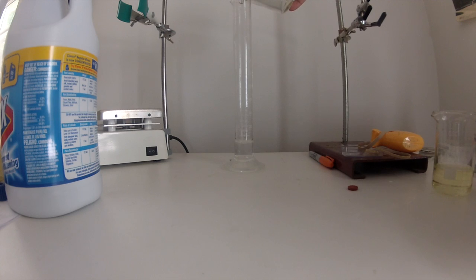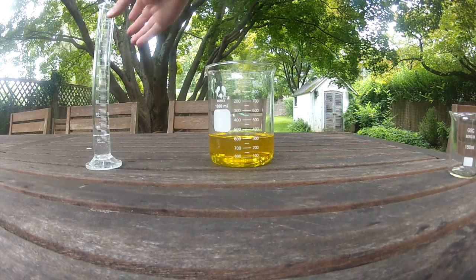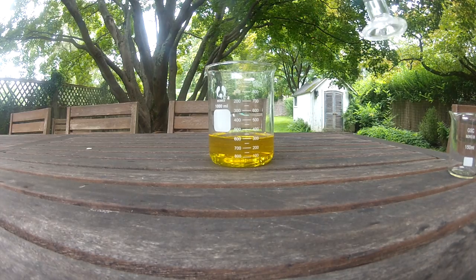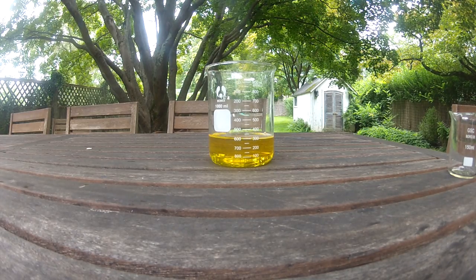Measure out 10 milliliters of water and add to that 4 milliliters of acetone. Then add the acetone water solution to the hypochlorite bromide solution. This will produce bromoform.